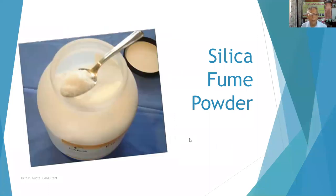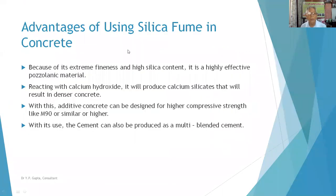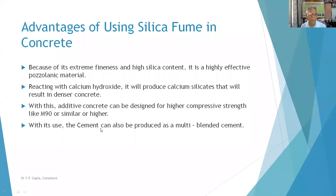Silica fume powder may be available in powder form or in slurry form. Both are possible — normally we use it in concrete or cement. The advantages of silica fume in concrete: because of its extreme fineness and high silica content, it is highly effective as a pozzolanic material, which is advantageous in reducing heat of hydration.